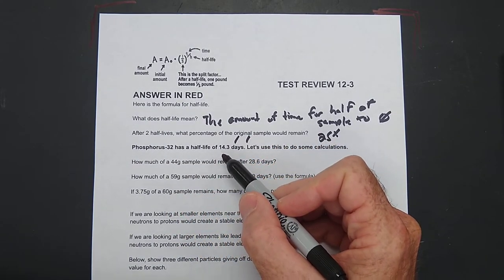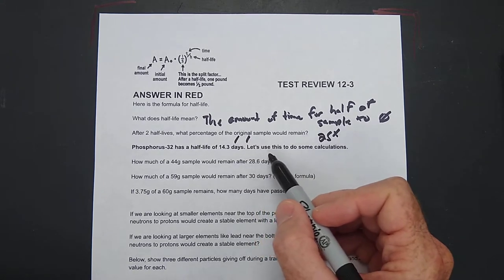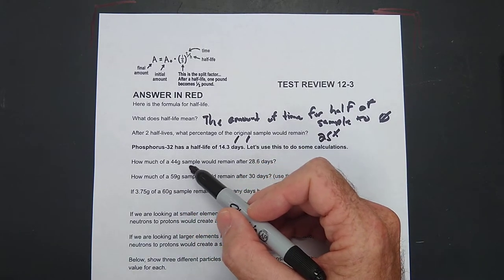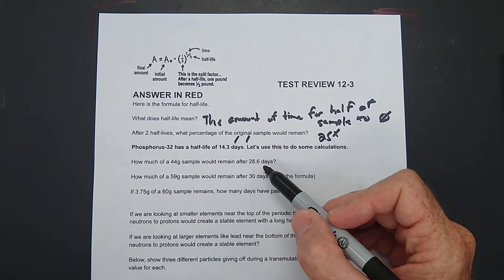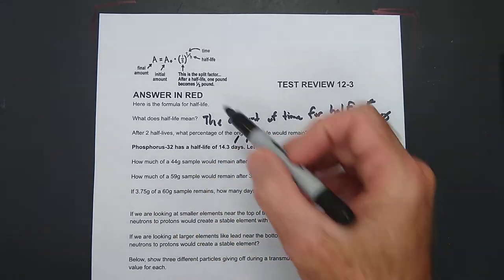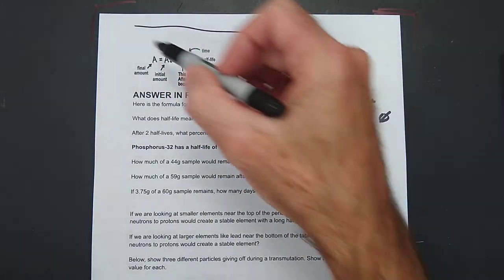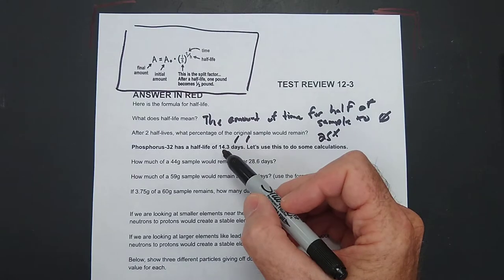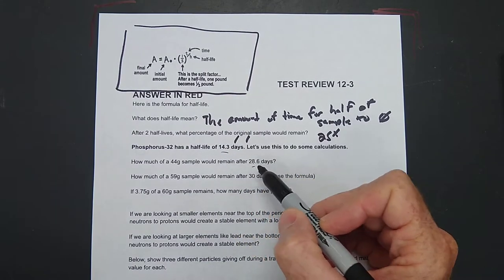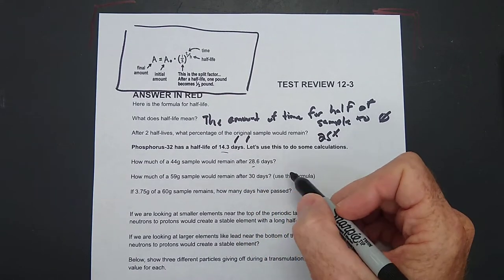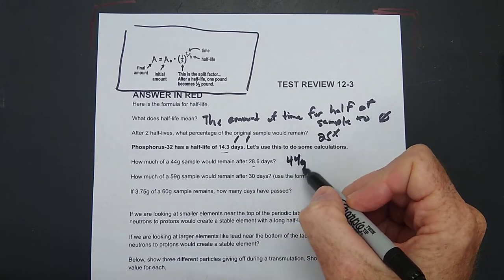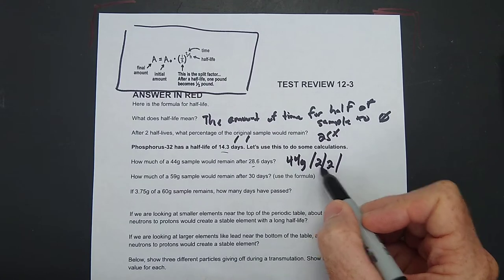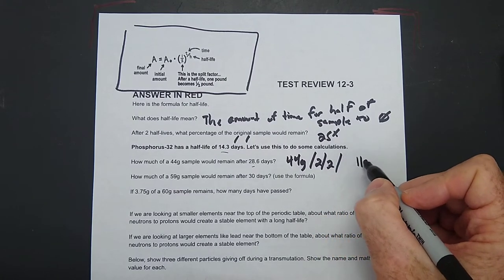Phosphorus-32 has a half-life of 14.3 days. Let us use this to do some calculations. How much of a 44-gram sample would remain after 28.6 days? Okay, several ways to do it. We can use this formula, but with something easy like this, 14.3 days, 28.6 days, so it underwent two half-lives. So you would divide 44 grams in half twice. That would go down to 22 and then down to 11 grams.